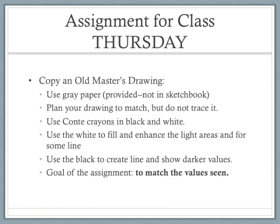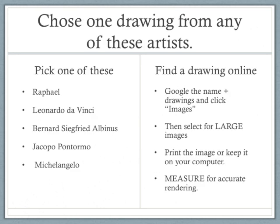Your assignment is to copy an old master's drawing. You'll use the gray paper I'm providing. Do not do this in your sketchbook. Plan your drawing to match, but do not trace it — the drawing should not be exactly the same size as the image you're working from. Use your black and white Conti crayons. Use the white to fill and enhance the light areas and for some line work. The black Conti crayon is a heavily used mark maker for line and to create darker values. The goal is to match the values you see within the drawing, so try to find one with lots of lights and darks. The drawing should have a one-inch border around it, and the interior of the paper should be filled edge to edge with the actual drawing you choose.